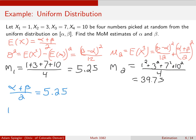And then we take the second theoretical moment, which is beta minus alpha squared over 12 plus alpha plus beta over 2 squared, and we set that equal to the second sample moment, which was 39.75. And now we need to solve this system of equations.